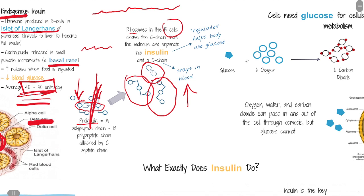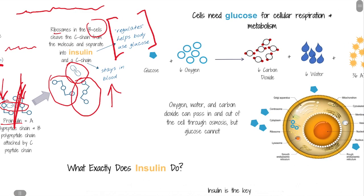If you want the textbook explanation of what insulin does, it regulates or helps the body to use glucose. I like to think of it as: insulin likes to get glucose out of the blood — that's its big goal. Sometimes it does that by using the glucose up, sometimes by storing it. If you think of insulin as a hormone whose main goal is to rid the blood of glucose, that will really help as we move forward. Obviously we don't want to rid the blood completely of glucose, but just keep that in mind.